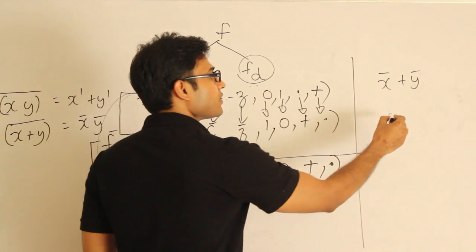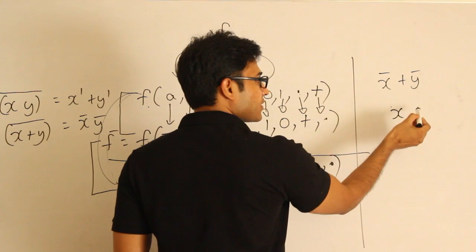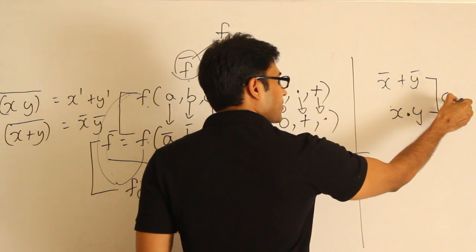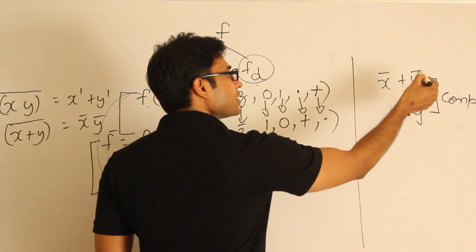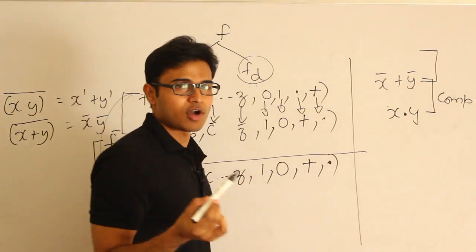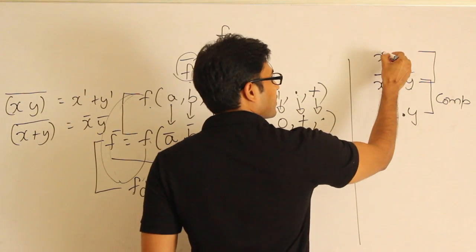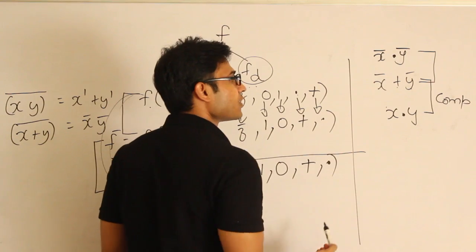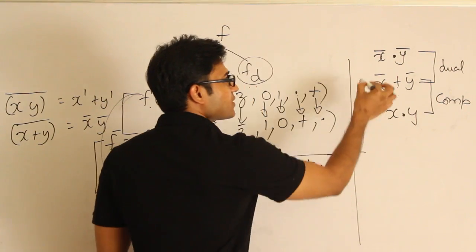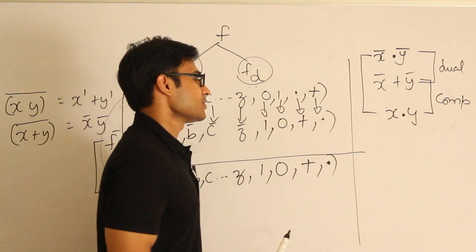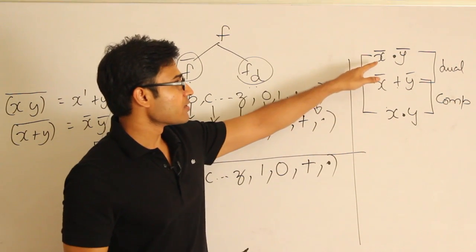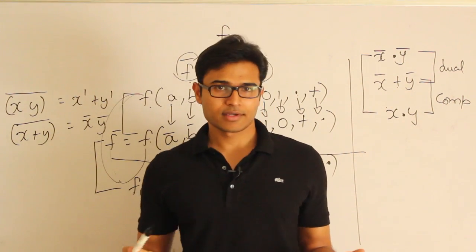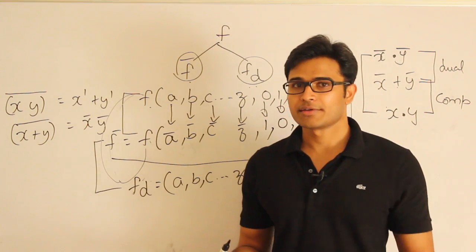For example, take x' + y'. To find its complement using De Morgan's law: replace each literal with its complement — x' becomes x, y' becomes y — and replace plus with dot. So the complement is x·y. For the dual: leave the variables as they are and just change the operations. The two results are the same expressions with literals in opposite form.